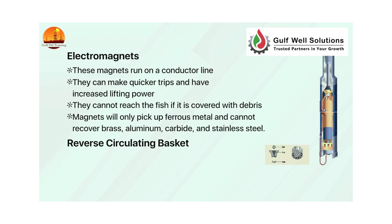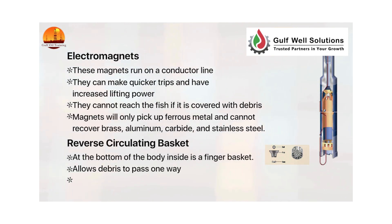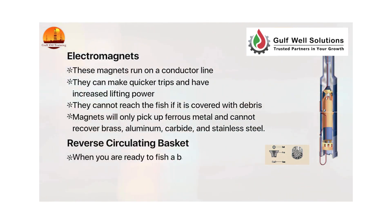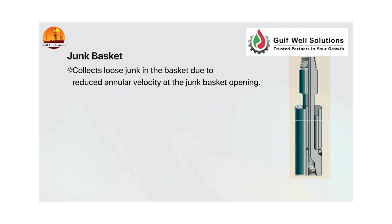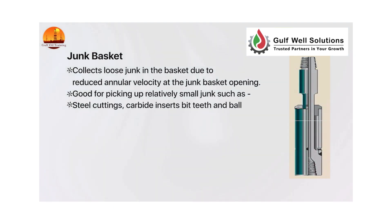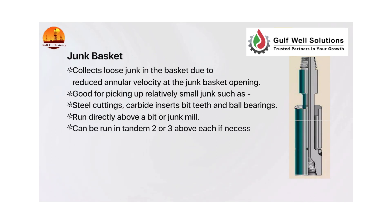Reverse circulating basket: at the bottom of the body inside is a finger basket that allows debris to pass one way. Normal circulation can be used. When ready to fish, a ball is dropped and a sleeve is moved to change the direction of the flow. Junk basket: collects loose junk in the basket due to reduced annular velocity at the junk basket opening. Good for picking up relatively small junk such as steel cuttings, carbide inserts, bit teeth, and ball bearings. Run directly above a bit or junk mill. Can be run in tandem — two or three above each if necessary. Will only work with direct circulation.